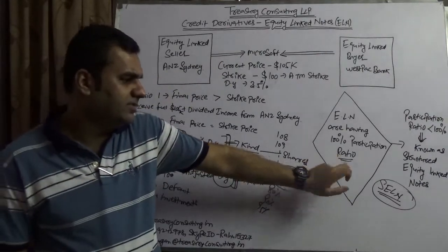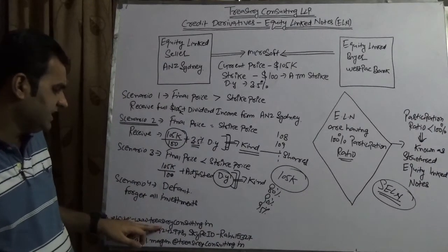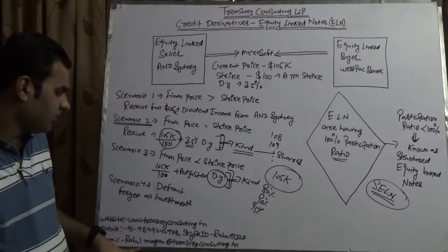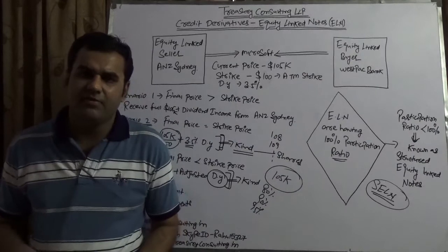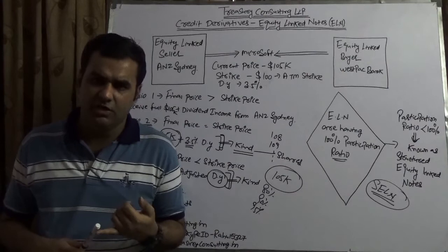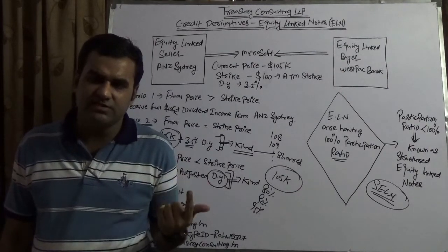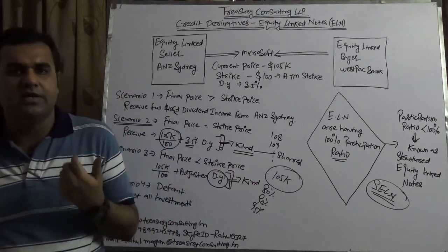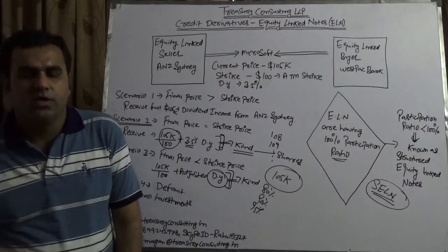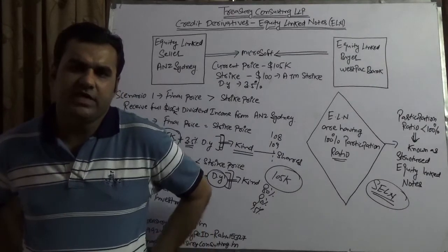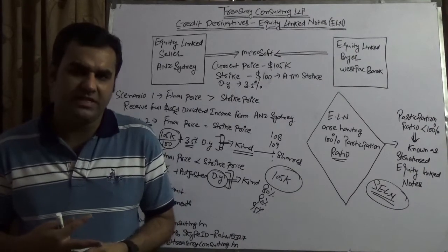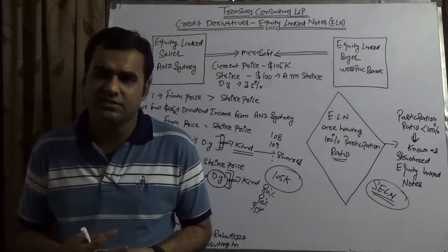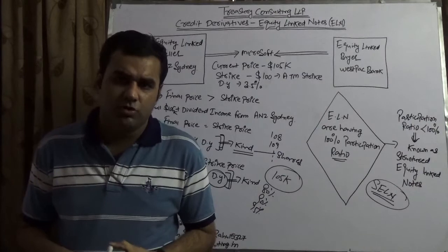The participation ratio is always 100 percent. If you have any questions, you are welcome to contact us at www.treasureyeconsulting.in, mobile 9899242978, Skype ID rahul5327, or email rahul.makan@treasureyeconsulting.in. We are also coming up with a fixed income terminal — a first-of-its-kind terminal we are launching. It will be SaaS-enabled (Software as a Service), PaaS-enabled (Platform as a Service), and IaaS-enabled (Infrastructure as a Service) — a 100 percent technology-oriented platform, first of its kind in Asia. We are starting design in May, targeting completion by April 2018, with the design phase expected by September 2017.